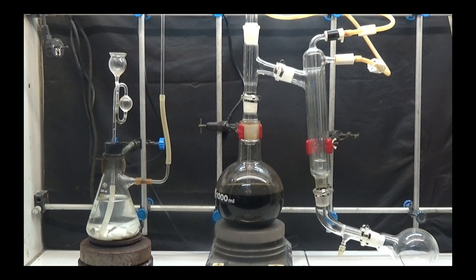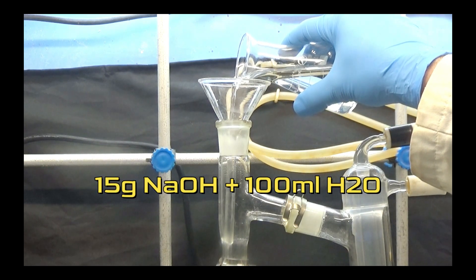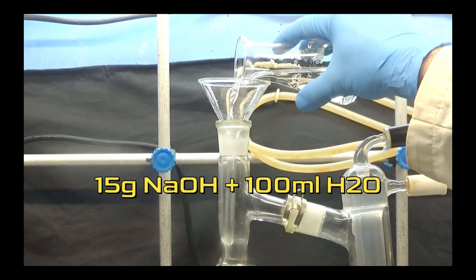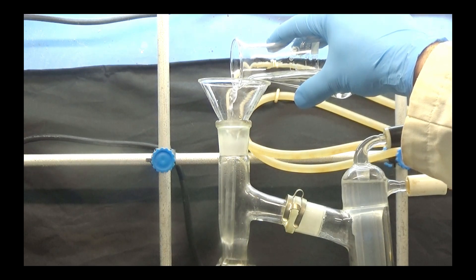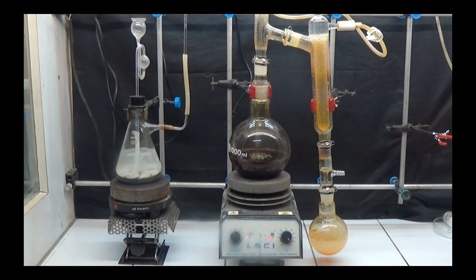Set up steam distillation equipment with a 1000 milliliters flask. Pour the filtrate into the flask and add a solution of 15 grams of sodium hydroxide in 100 milliliters of water. As much methanol as possible can be extracted by vacuum distillation. After distilling all the possible methanol, we connect the steam and distill.